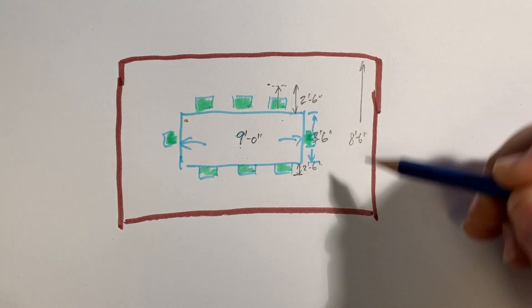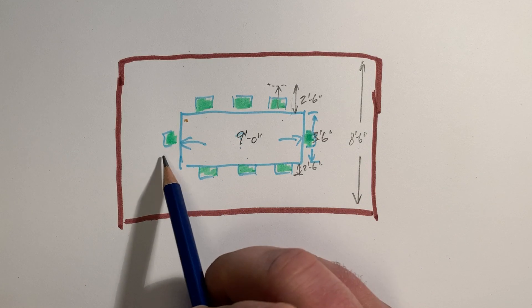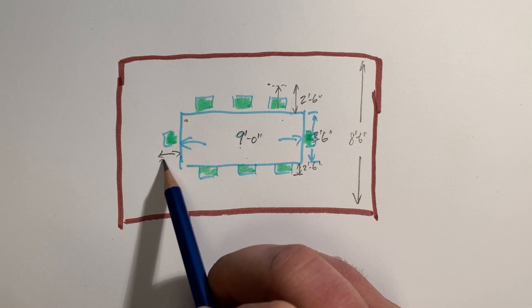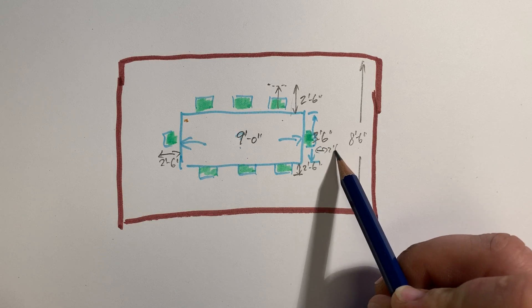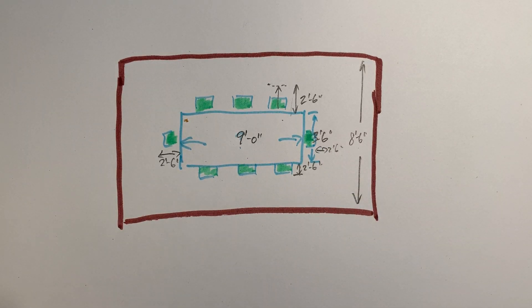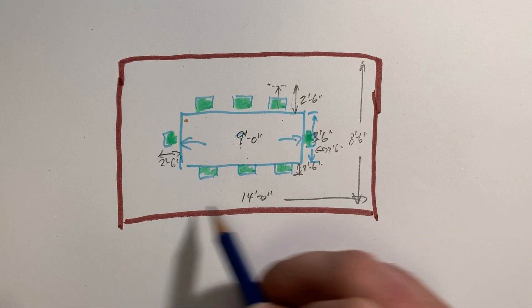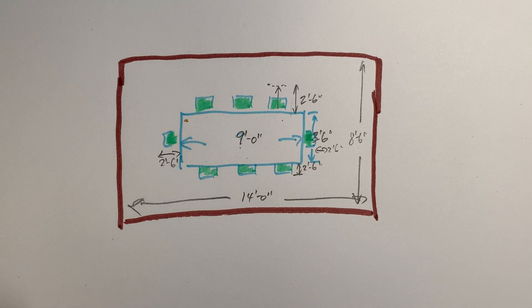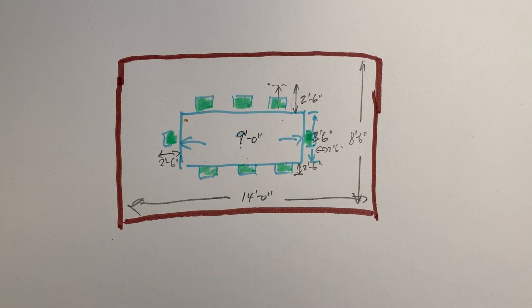Eight foot six would be my minimum width required for this table. It's the same thing going the other way. If I have two foot six and two foot six going this way, which is five feet, plus another nine, that means I have 14 feet of width. So in this particular situation, that would be my minimum required space for that space.